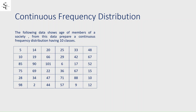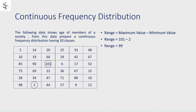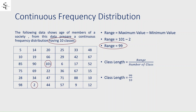Now let's move on to the practical example. The following data shows the ages of members of a society. From this data, prepare a continuous frequency distribution having 10 classes. First we need to obtain the range: range = maximum value − minimum value. The maximum value is 101 and the minimum value is 2, so range = 101 − 2 = 99. Then class length = range / number of classes = 99 / 10 = 9.9.